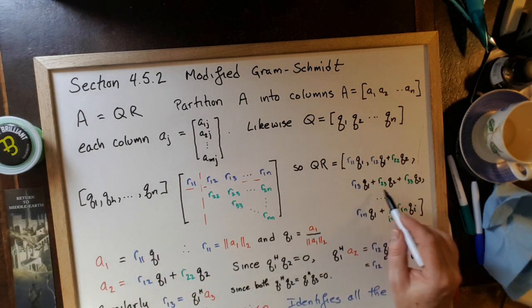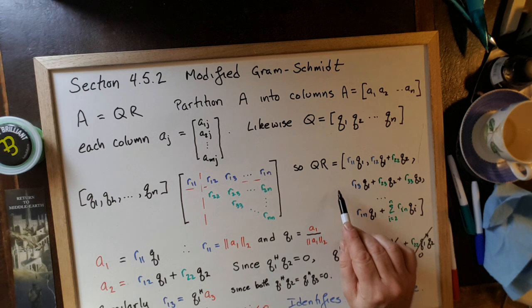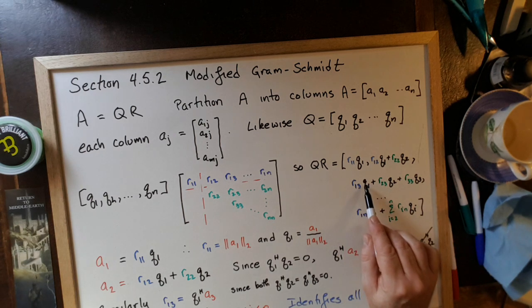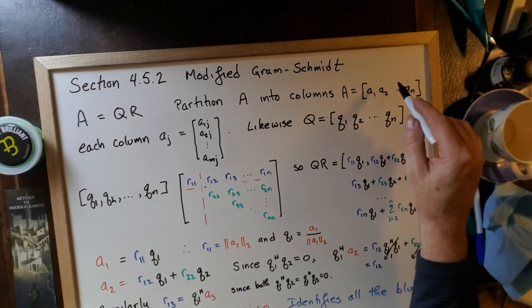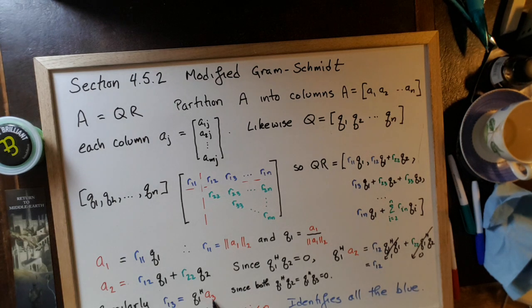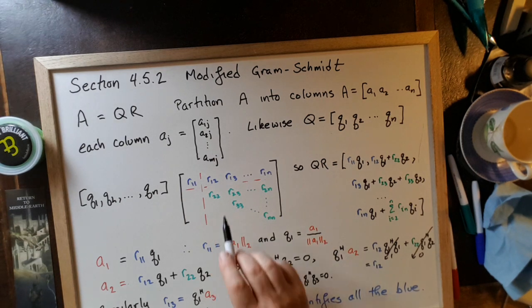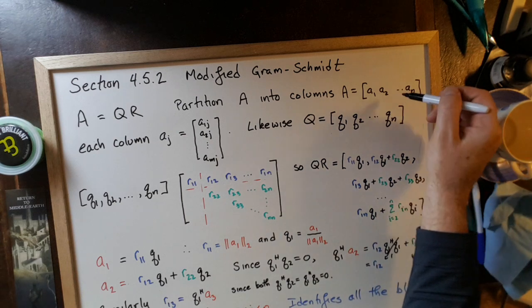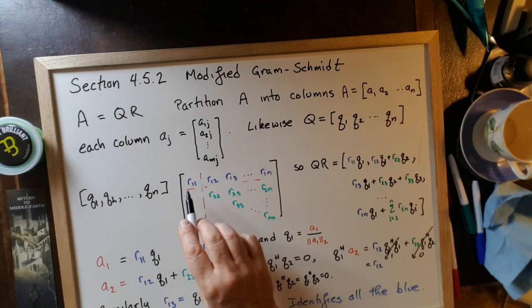Similarly, the next column, this thing must equal A3. So we must, again, we just multiply that whole equation by Q1H. And Q1H times this whole equation gives us R1,3 times Q1HQ1. So that's 1 plus this times 0 plus this times 0 must equal Q1H times A3. So R1,3 must be Q1HA3 since both of those are 0. And the same idea works for all of these things. And we get all of these rijs by multiplying the original columns by the complex conjugate transpose of Q1, which we worked out in the first step. So once we know what Q1 is, we can find out what all of these rijs are, from this one all the way to this one. So that identifies the first row.